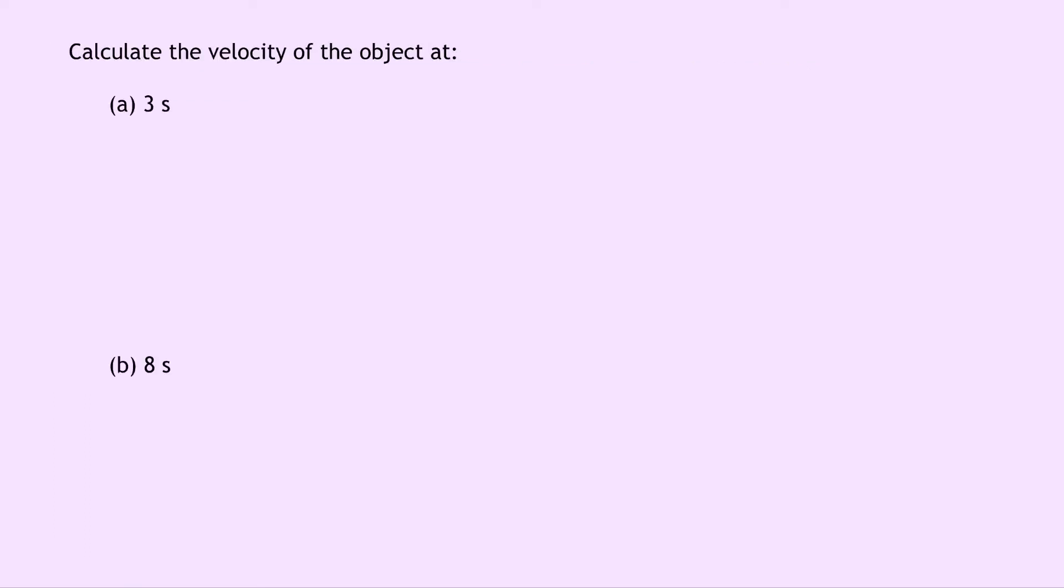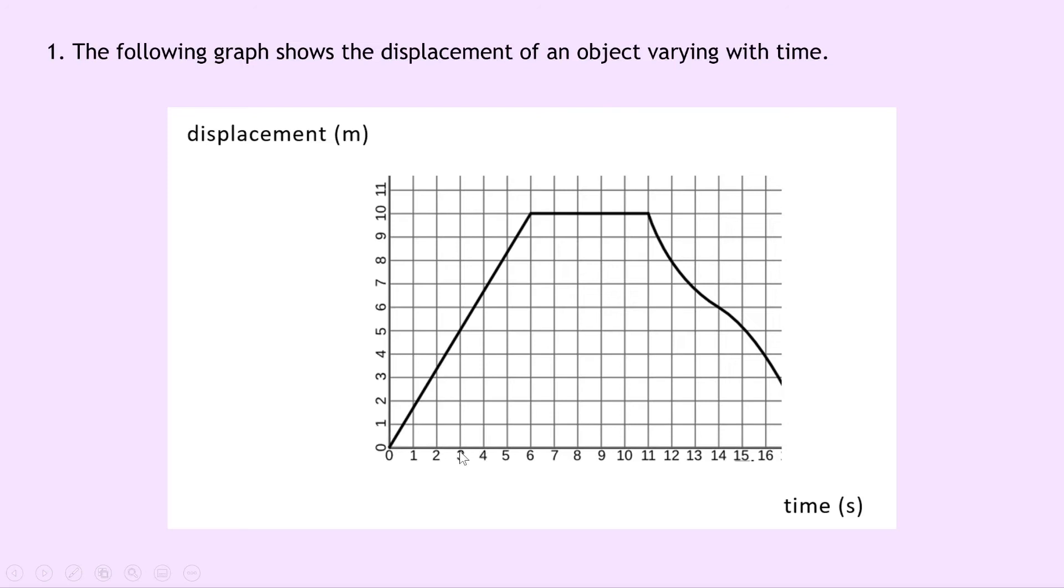For part A, the question asks to calculate the velocity of the object at 3 seconds. Well you should know that to calculate the velocity from a displacement time graph, we need to get the gradient of the line on the graph. So the velocity equals the gradient of the line on a displacement time graph, and we're interested in looking at the line at 3 seconds. We need to find two coordinates that lie on that line which passes through 3 seconds. So here's 3 seconds over here. The easiest two coordinates to choose would be the point 0, 0, and also the point 3, 5.